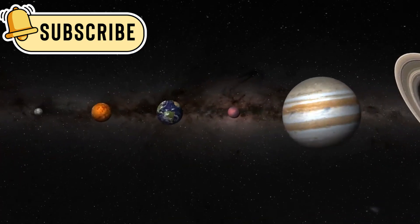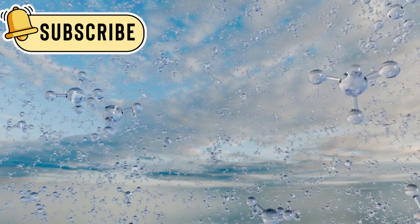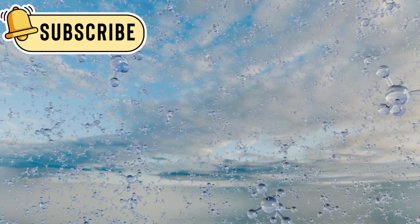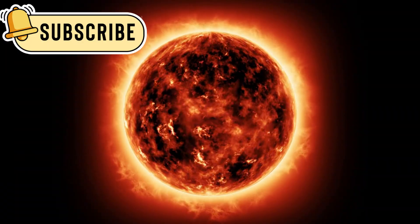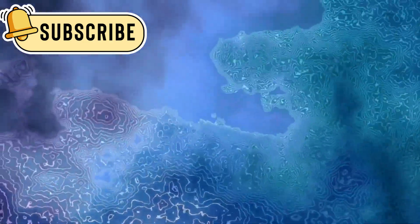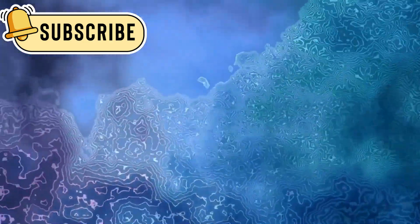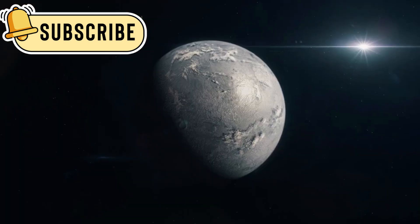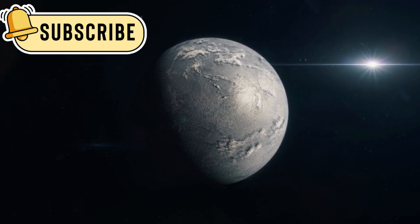Even Pluto's atmosphere has surprised scientists. It's thin, but it contains small amounts of nitrogen, methane, and carbon dioxide. As Pluto orbits the Sun in its long path, its atmosphere changes. Sometimes it gets thicker, and other times it freezes back onto the surface. This cycle is unlike anything seen elsewhere in the solar system. It gives researchers a brand new model for how atmospheres might work on icy worlds.